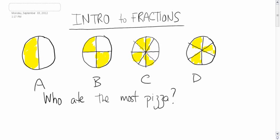Alright, here's my question to you. Who has eaten the most pizza? A, B, C, or D? Let's take a look. Person A has eaten one out of two total slices. One out of two total slices.